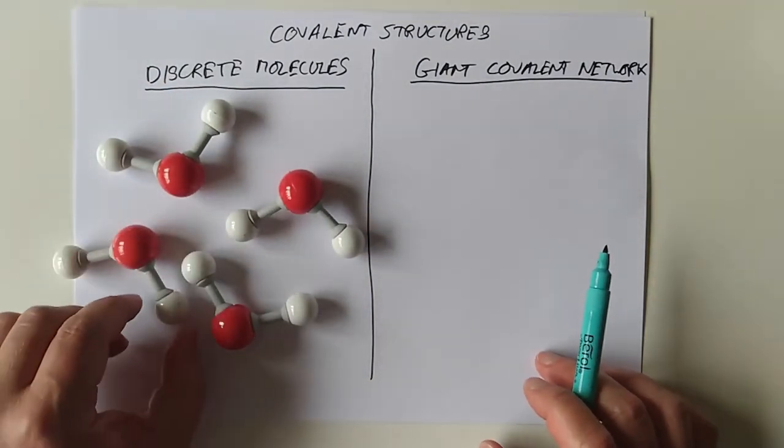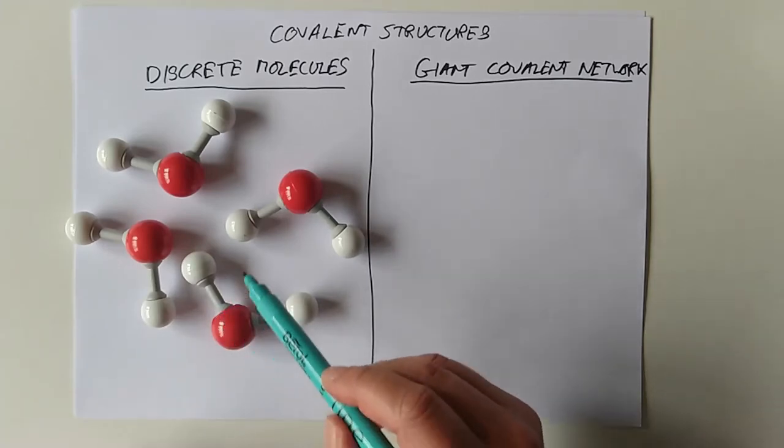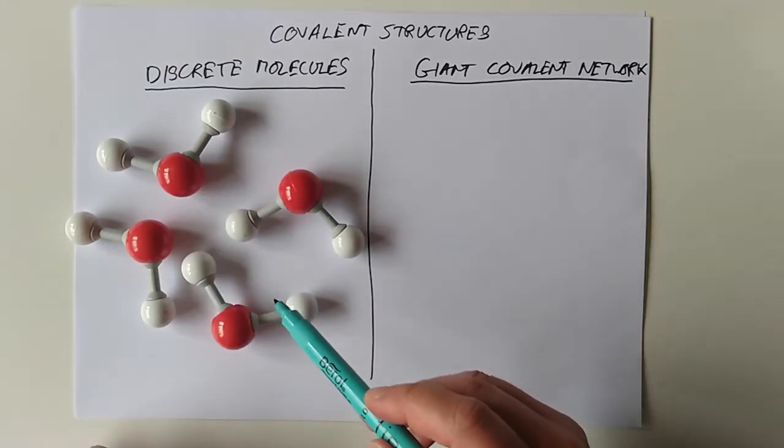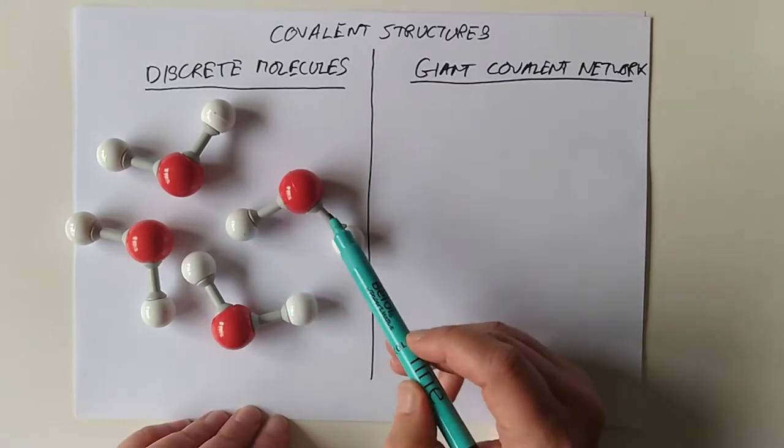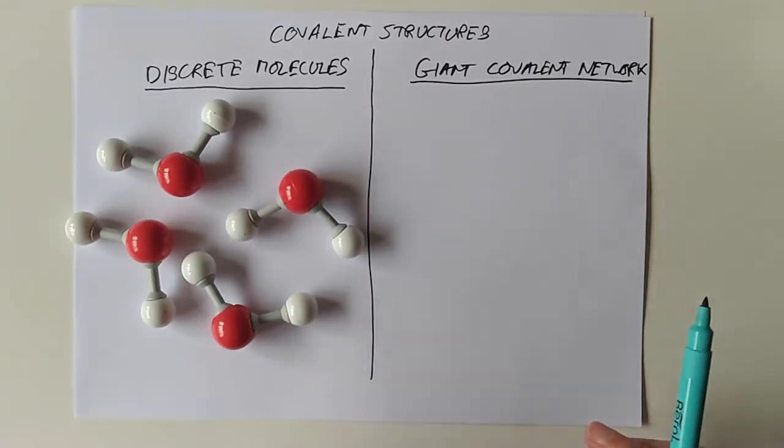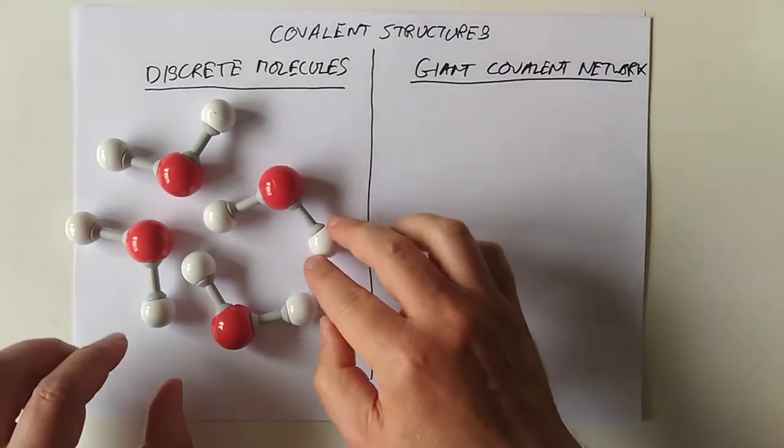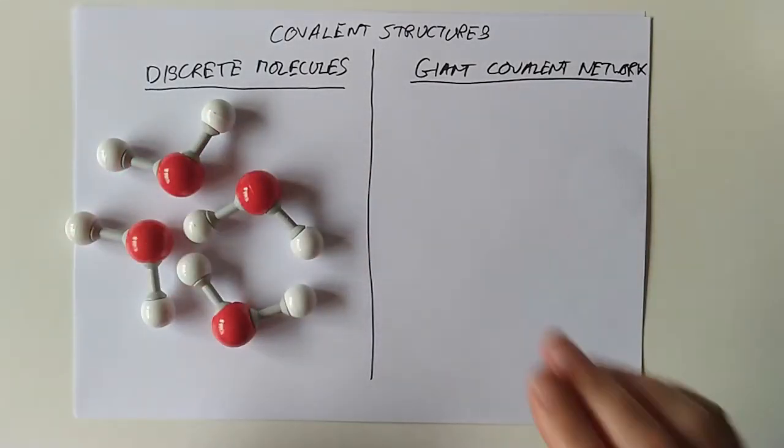Famous SQA trick question tries to lead you into saying, oh yeah, there's covalent bonds between the molecules. No, there's not. There's covalent bonds inside the molecule, not between them. There is something between them, but we don't need to worry about that until you get to higher.